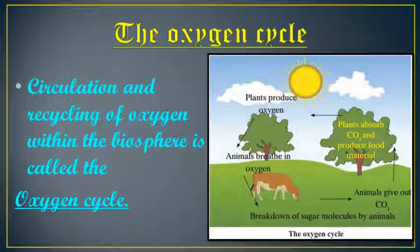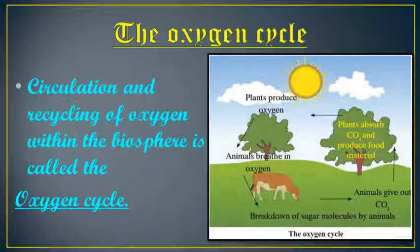In the atmosphere, plants produce oxygen and animals breathe it in. Animals break down sugar molecules and give out carbon dioxide. That carbon dioxide is absorbed by plants, which produce food material in the presence of sunlight. Oxygen is also highly reactive and readily reacts with other elements — for example, oxygen reacts with hydrogen to form water, and with carbon to form carbon dioxide.